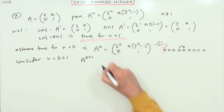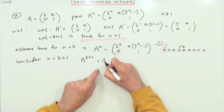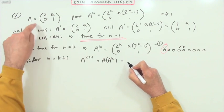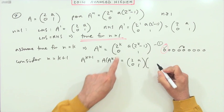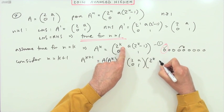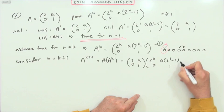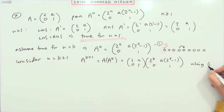plus 1? Well that would just be A to the k multiplied by an A. So that would just be A, which is 2, a, 0, 1, multiplied by A to the k, which you're assuming is this thing: 2 to the k, a times 2 to the k minus 1, 0, 1. And I'll say here using equation 1.